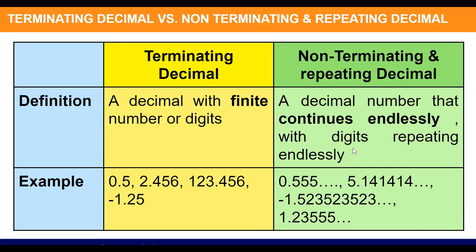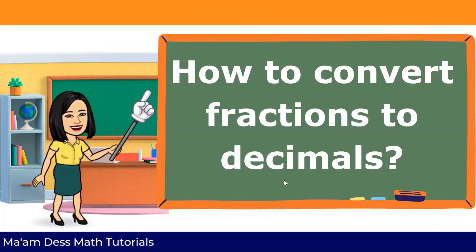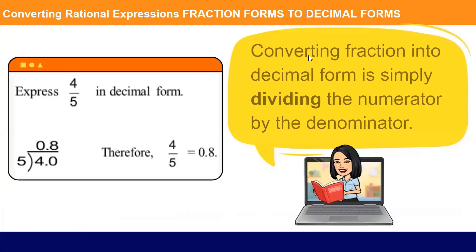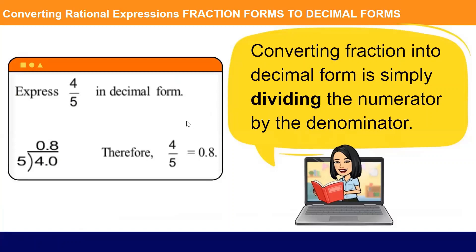How to convert fractions to decimals? Converting a fraction into decimal form is simply dividing the numerator by the denominator.